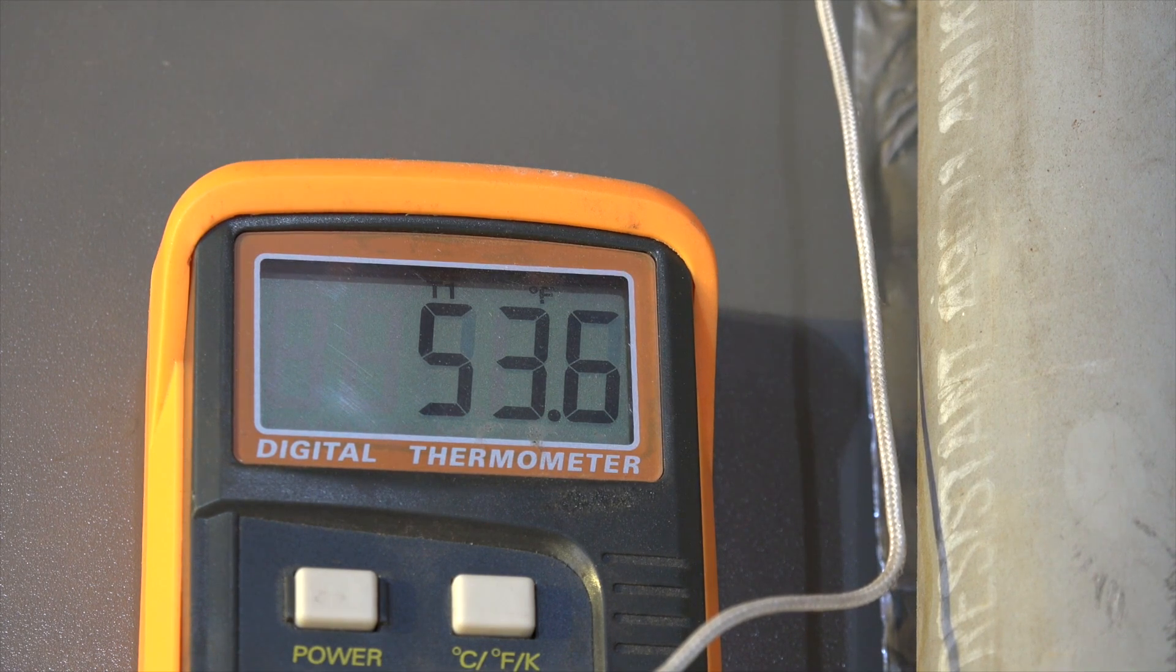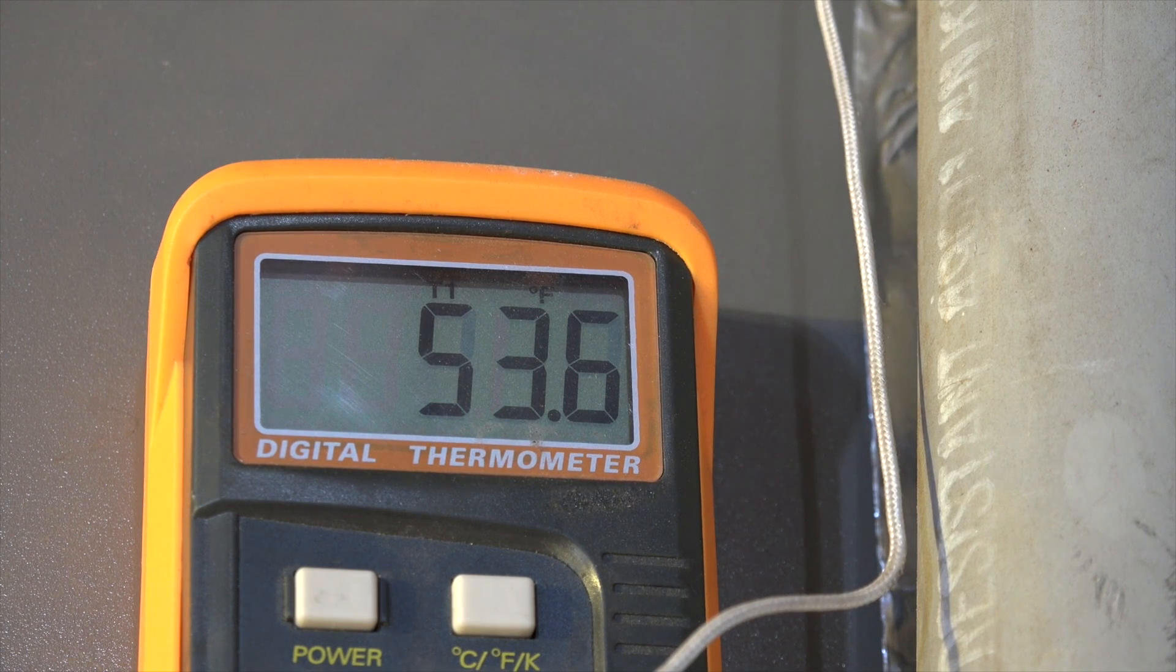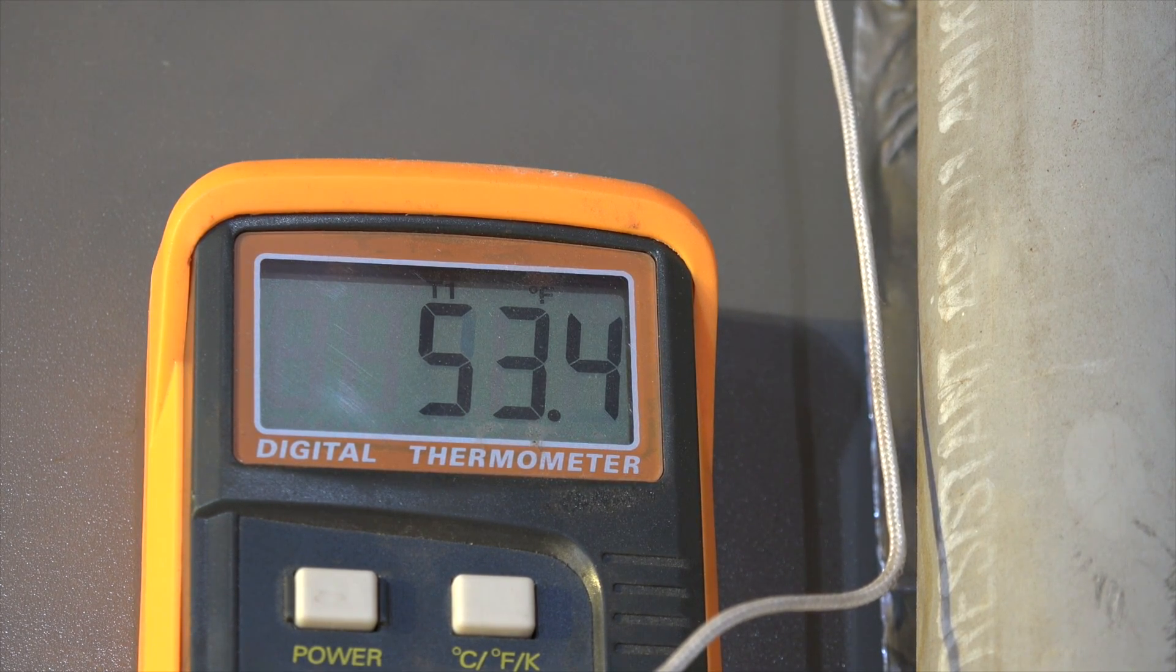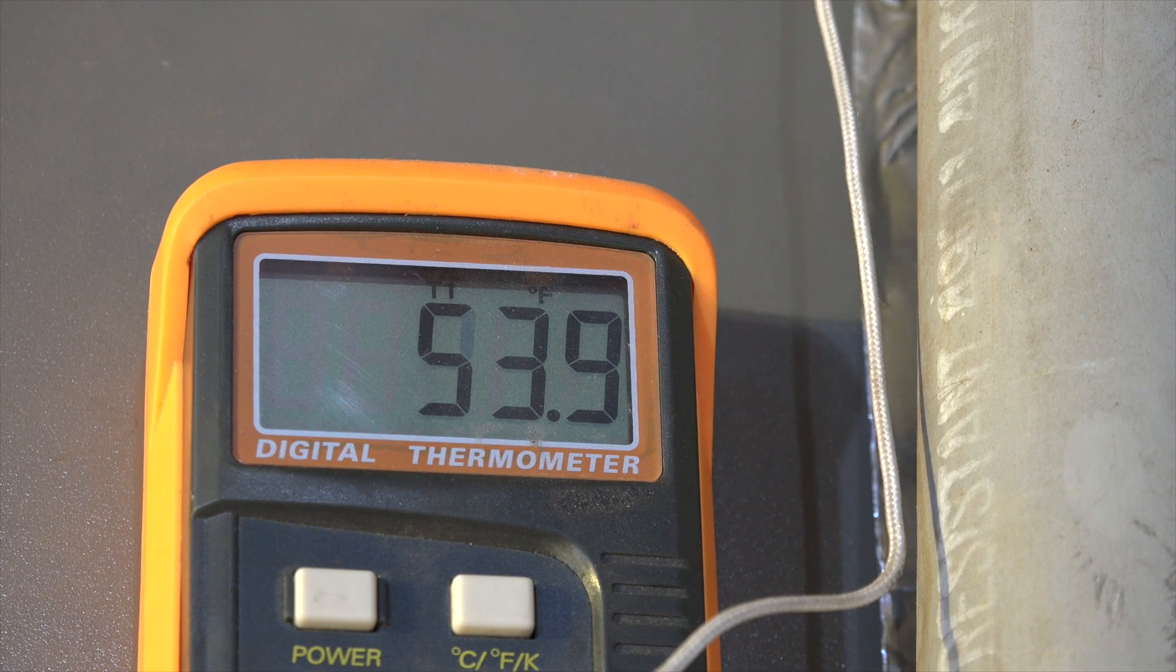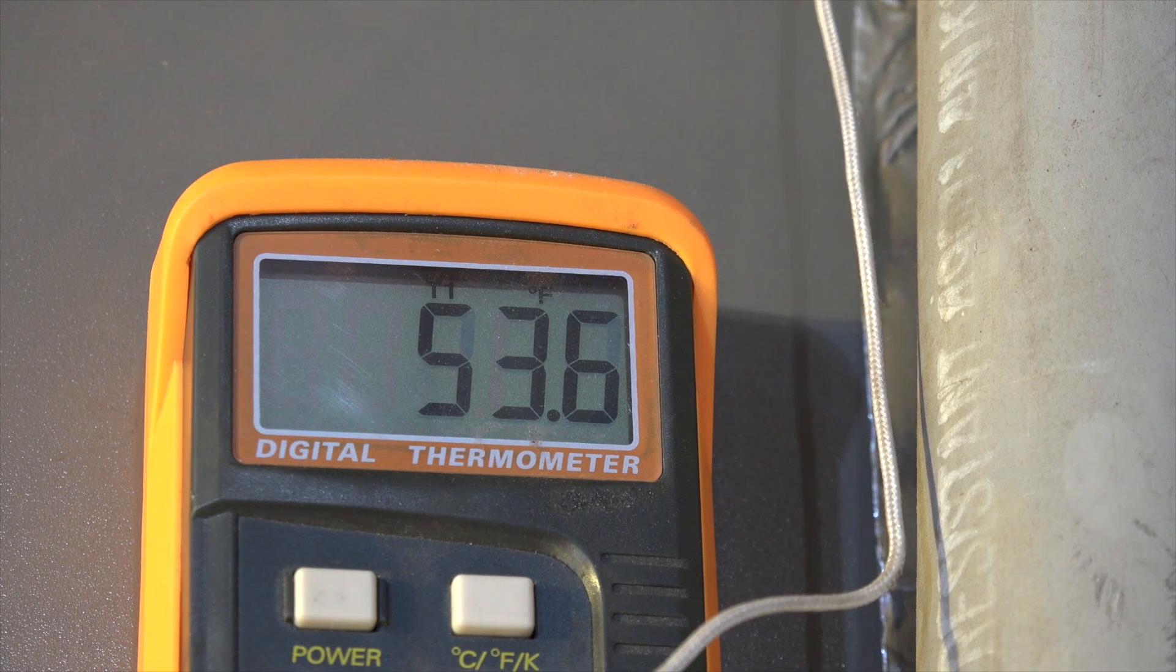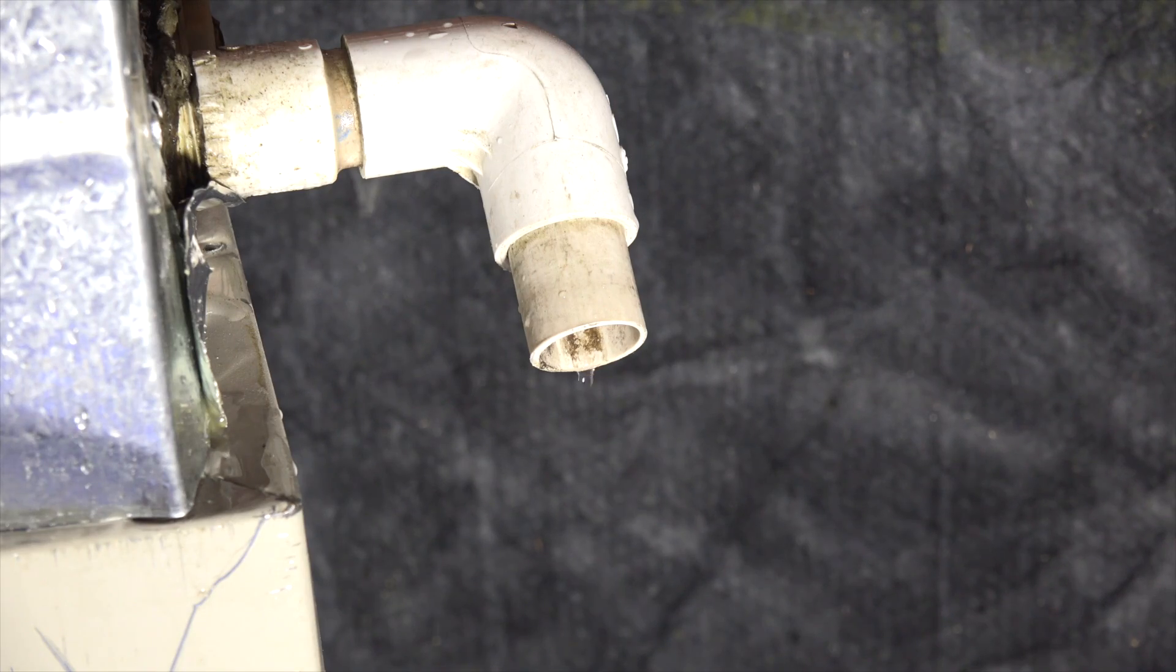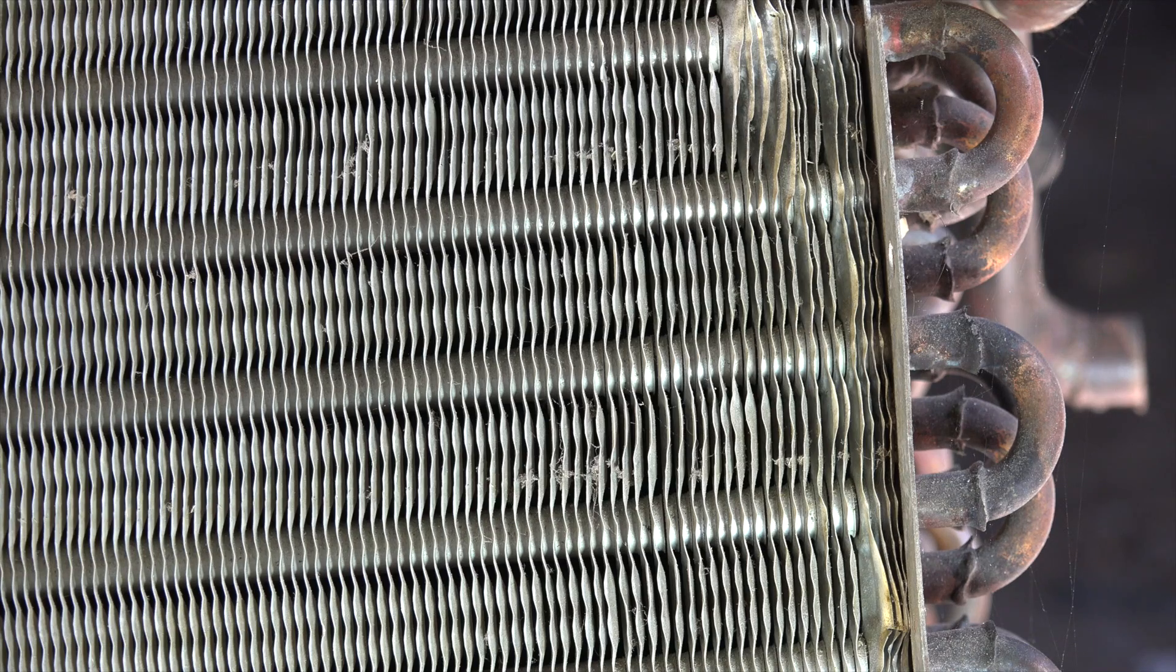We're at 53.6 duct temperature, and our dew point is 41 and a half. I have not reached the dew point—at least the duct temperature doesn't show I've reached the dew point. So why am I condensing water? You can see we do have condensate draining out of this, so we are condensing water in this coil.